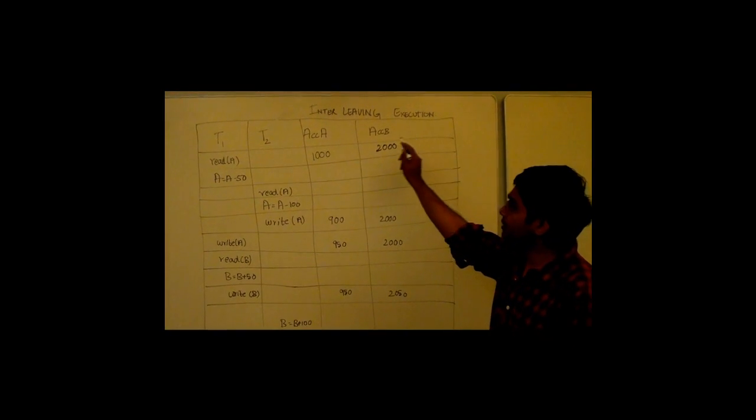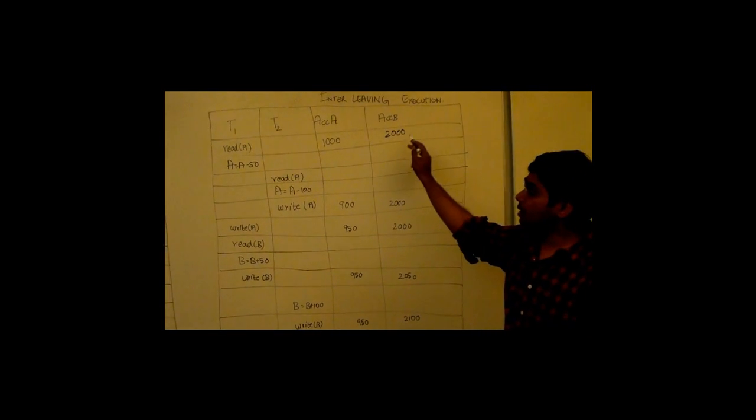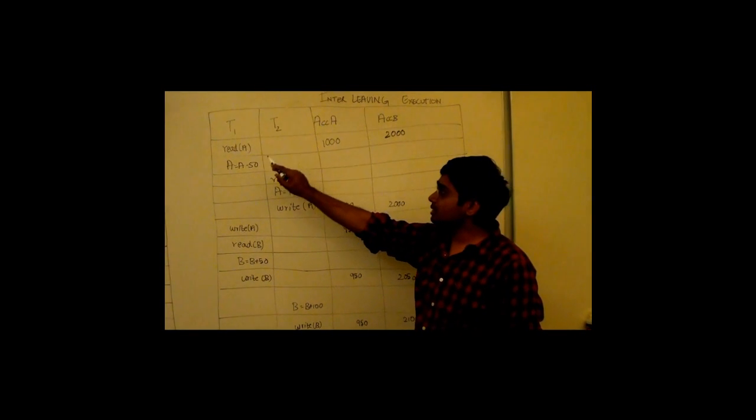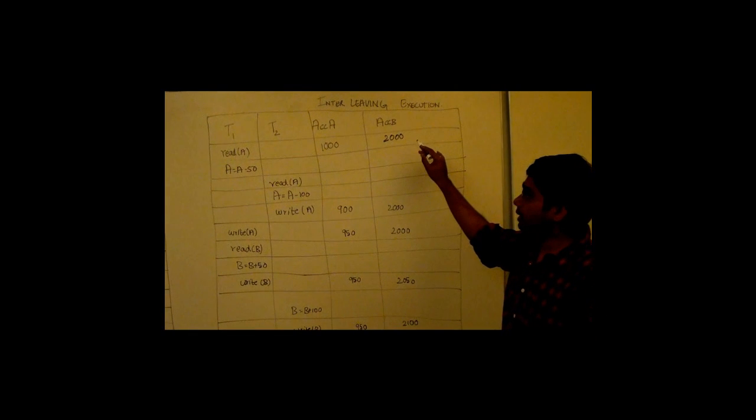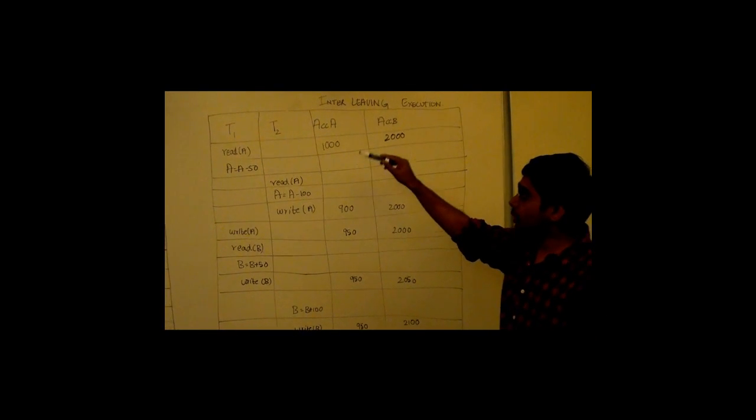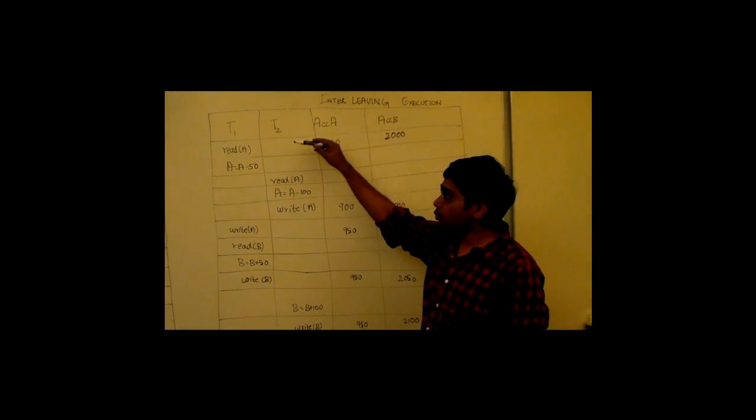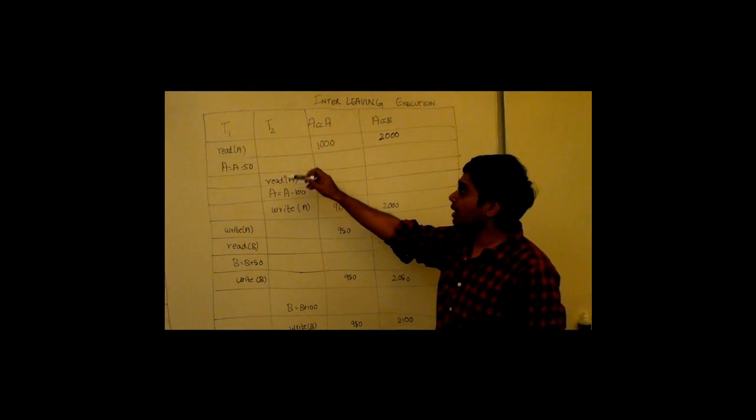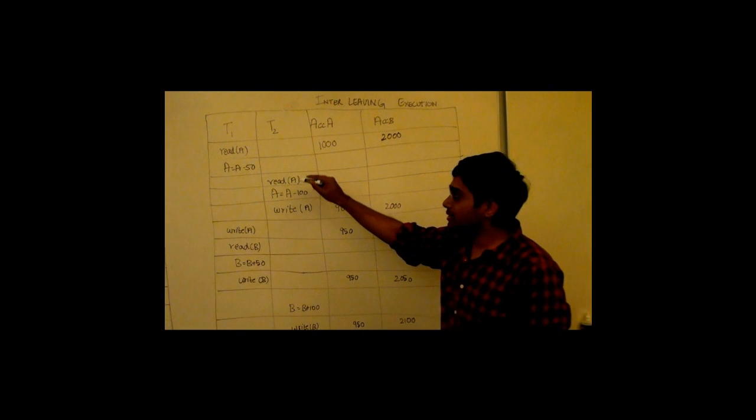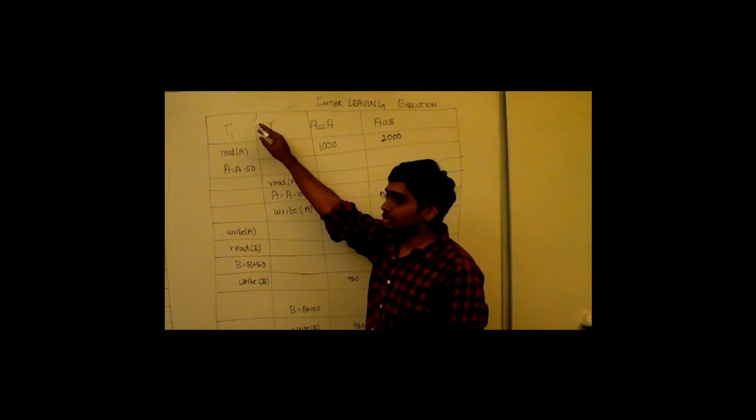In interleaved execution, we have two transactions, T1 and T2, between account A and account B. Then, account A decides to send 50 in transaction T1 to account B. And immediately, it decides to do a transaction T2 to send 100 to account B. Since transaction T2 starts without the whole completion of transaction T1, here, transaction T2 executes first and then transaction T1 executes.